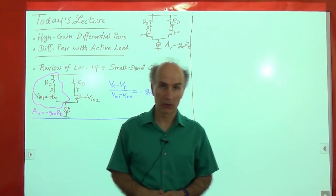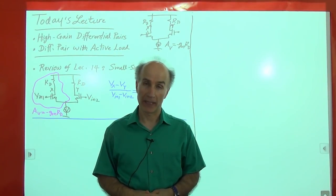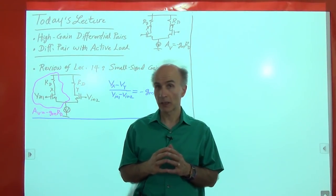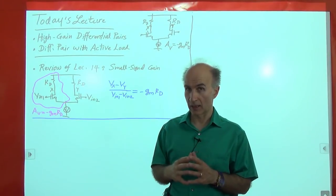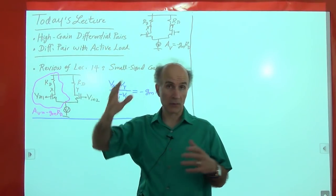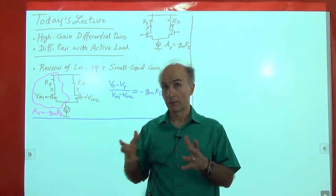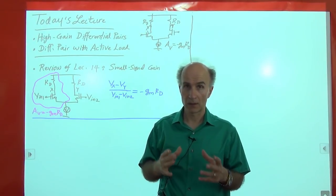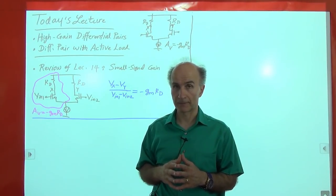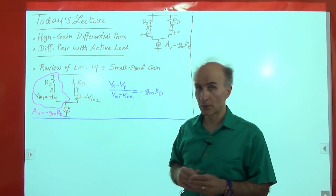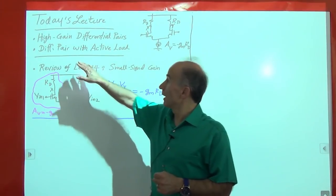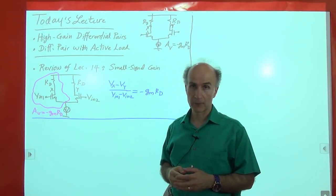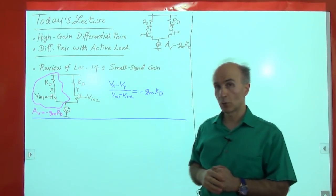Greetings, welcome to Electronics 2. This is lecture number 15 and I am Bezardo Zabi. Today we'll spend some time on differential pairs again, but this time looking to see how we can increase the voltage gain and go to high gain circuits. We are looking for gains of maybe 50, maybe 100 — gains that are not really possible to obtain using the simple differential pair that we have studied so far. We will also introduce a new circuit topology which we call the differential pair with active load. But before we go there, let's just review what we covered last time.